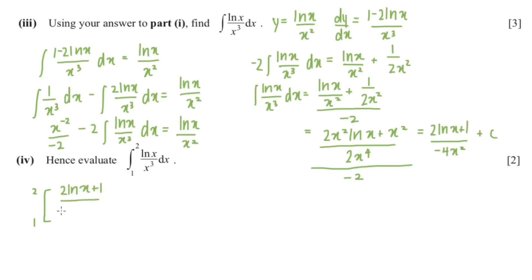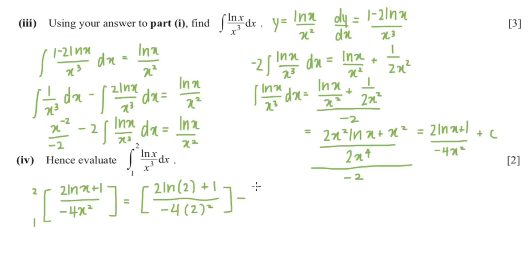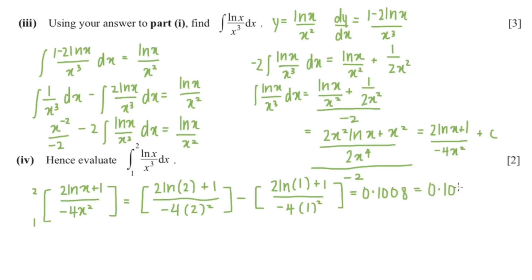Substituting the limits into 2·ln(x) plus 1 over negative 4x squared: we compute [2·ln(2) + 1] over (negative 4 times 2 squared) minus [2·ln(1) + 1] over (negative 4 times 1 squared). Putting this into the calculator gives 0.1008, which rounded to 3 significant figures is 0.101.